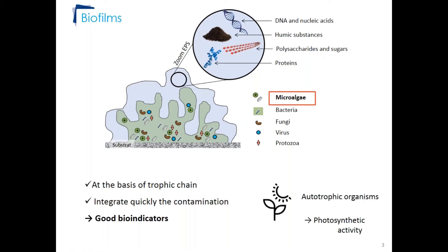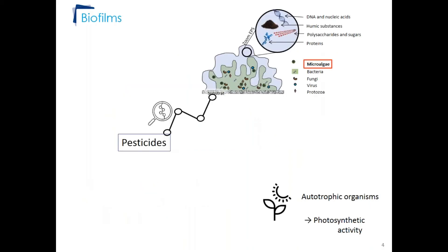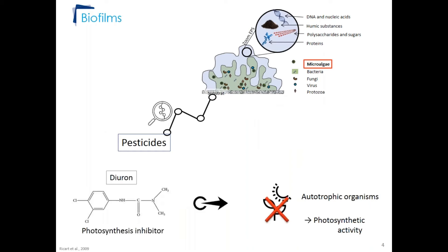Biofilms are composed of autotrophic organisms like microalgae, which have photosynthetic activity. The aim of the thesis was to study pesticide-biofilm interaction. Throughout the thesis, diuron was used as a model molecule, which is a photosynthesis-inhibitor herbicide.